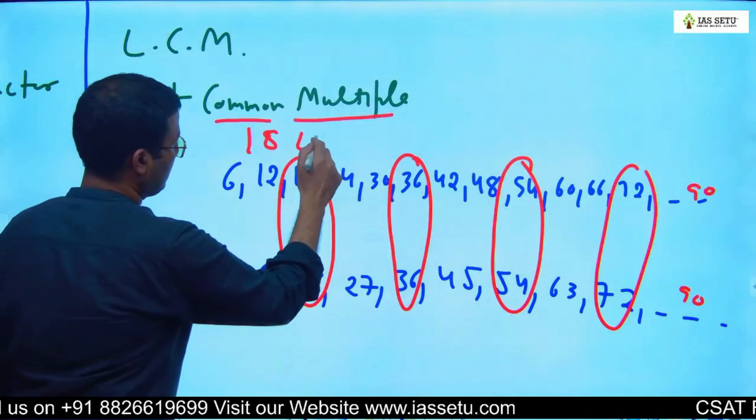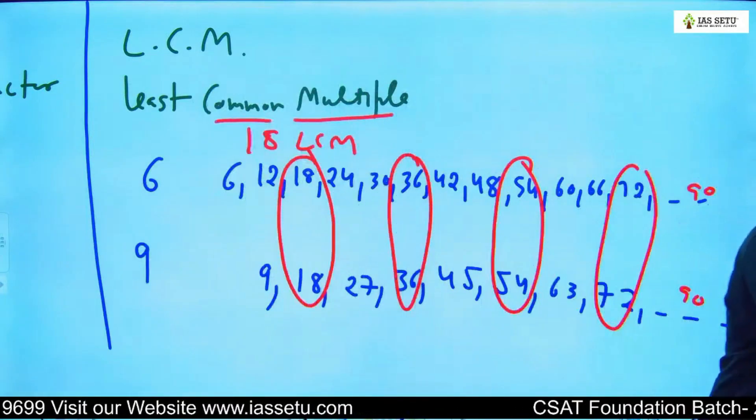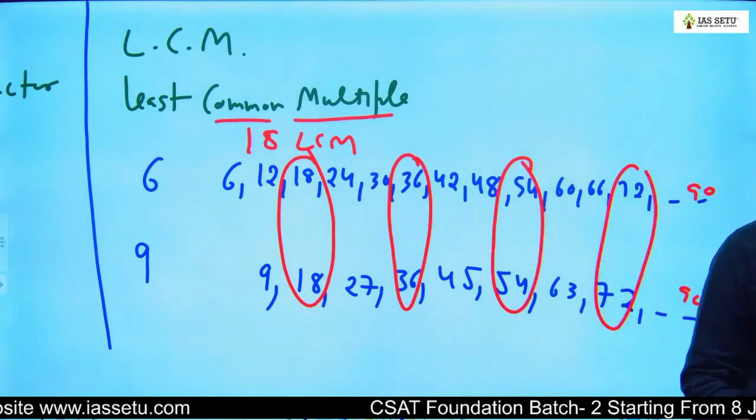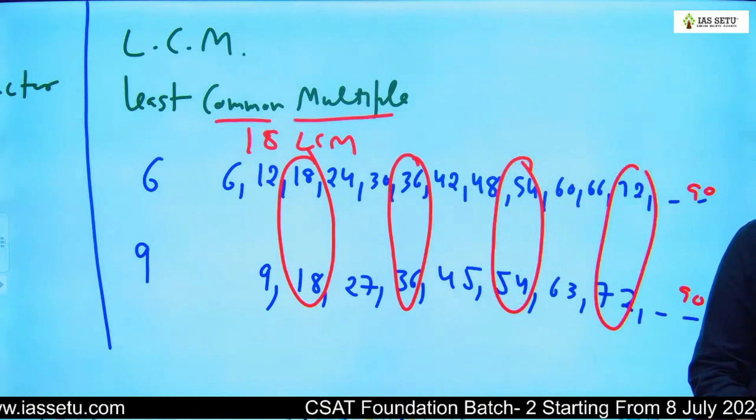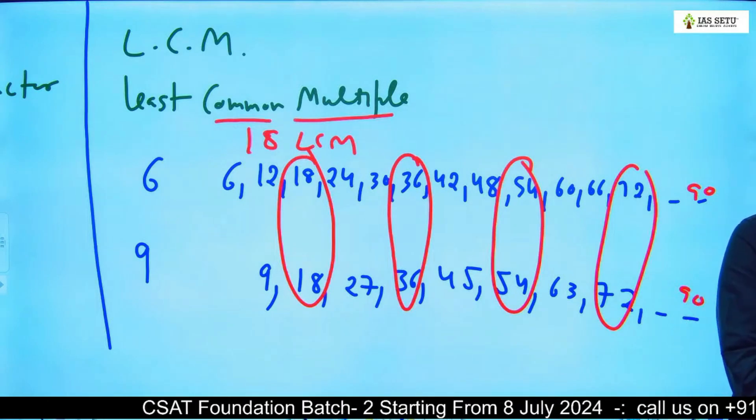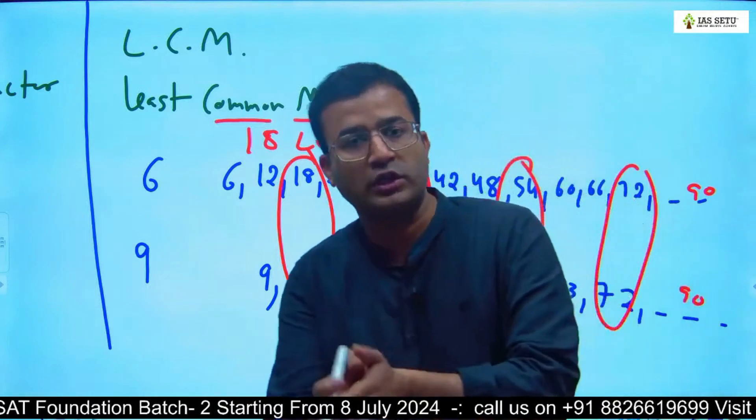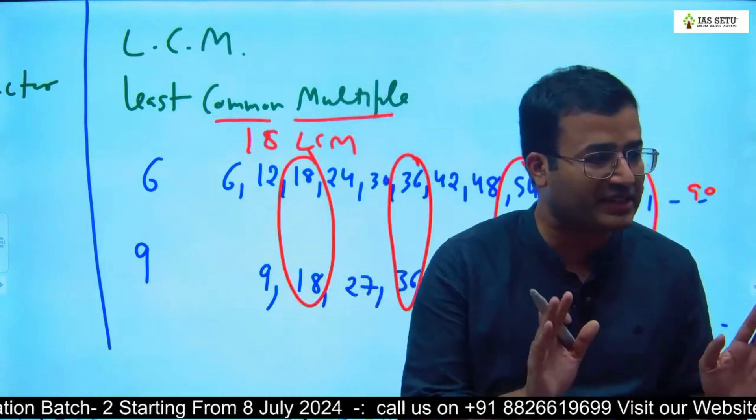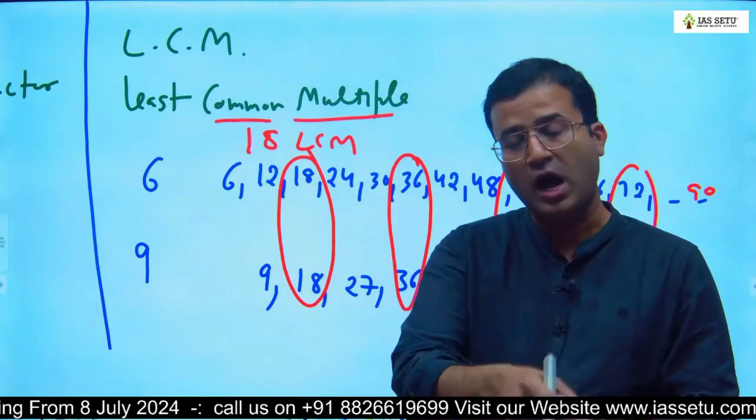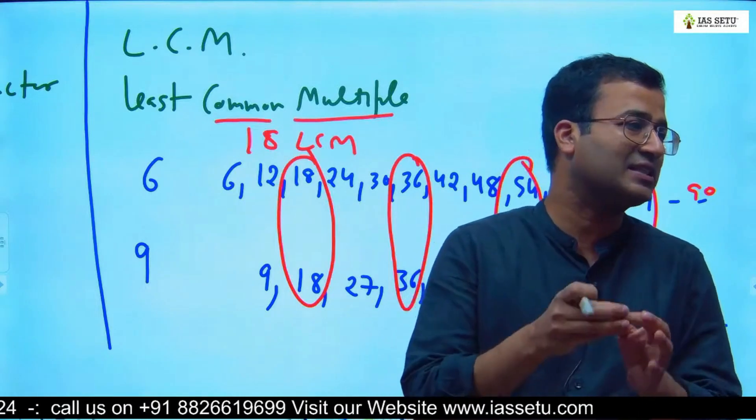If you ask me what is the definition of LCM, this word clearly defines what is multiple. This is the best definition: Least Common Multiple. Out of multiples, take common multiples. Out of common multiples, the least one is the least common multiple.